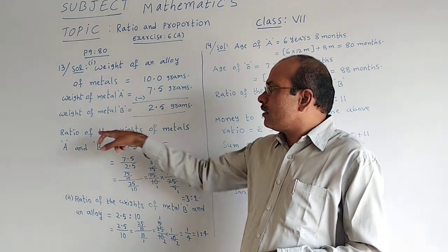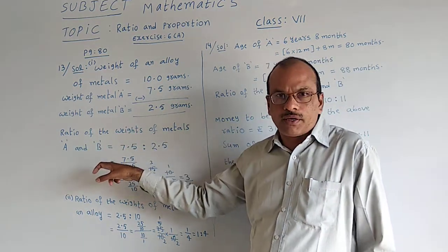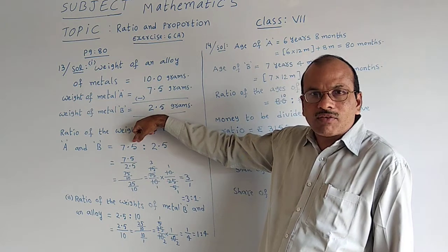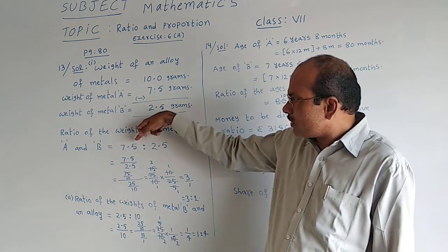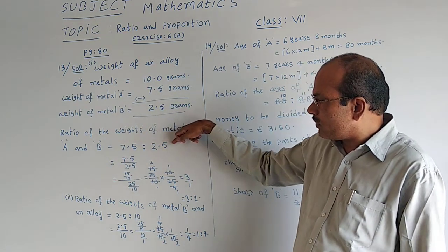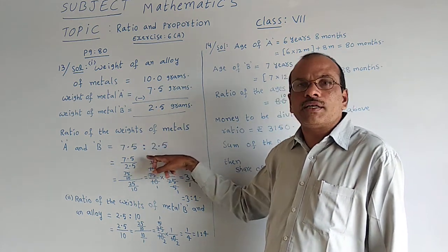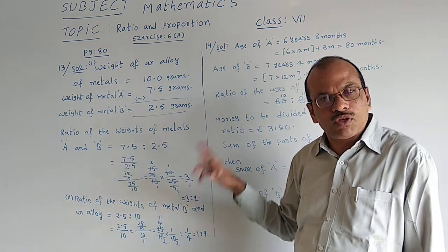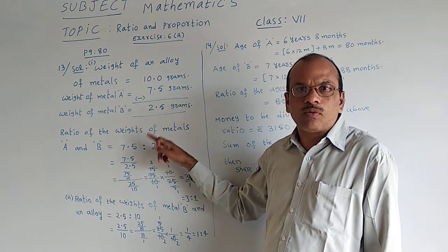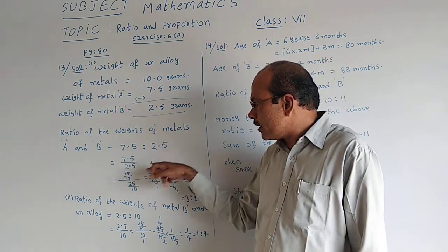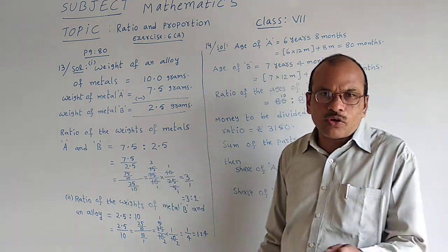Now, they said in the first bit, ratio of the weight of metals A and B. A metal weight is 7.5 is to metal B weight is 2.5. So 7.5 is to 2.5, which is 7.5 by 2.5, because ratio can be written in the form of fraction. We said already.